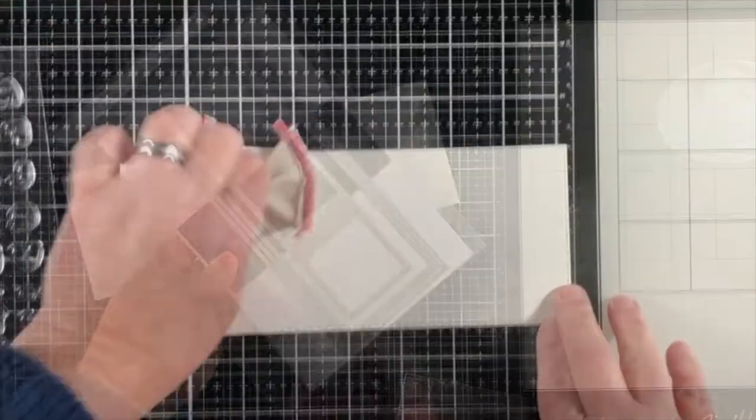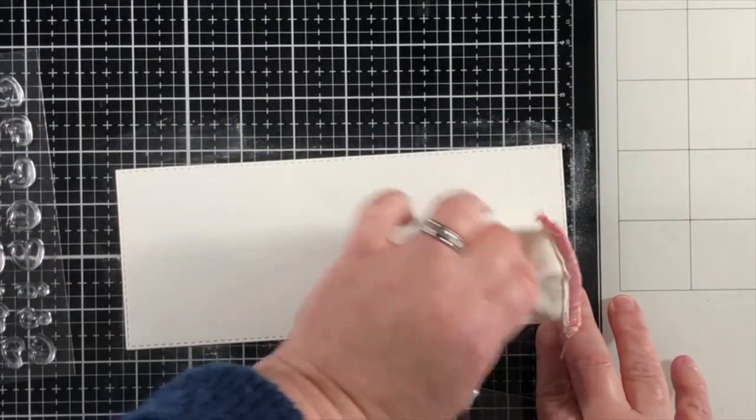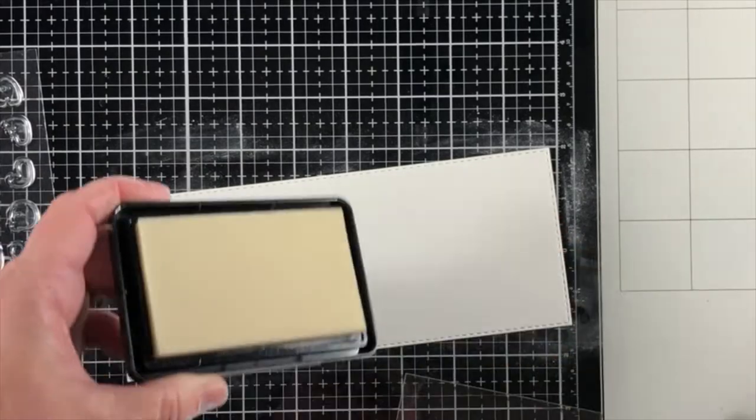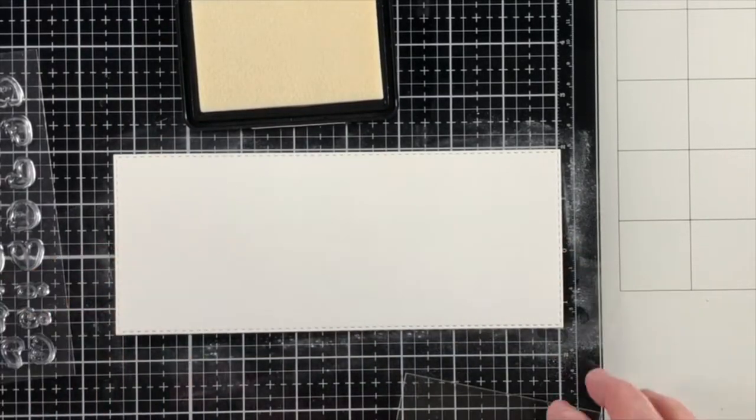I'm going to start off by making sure that I have a panel that's already die cut with a slimline rectangle panel, and I'll put the link to what I used in the video description below.